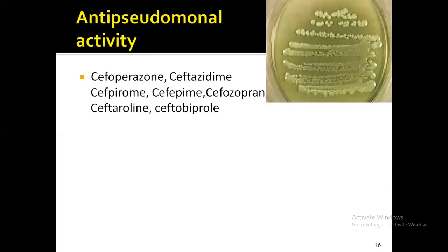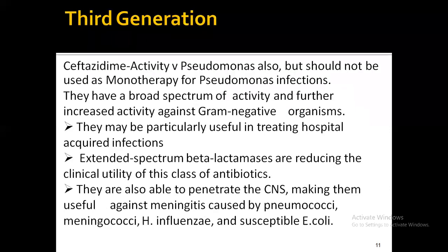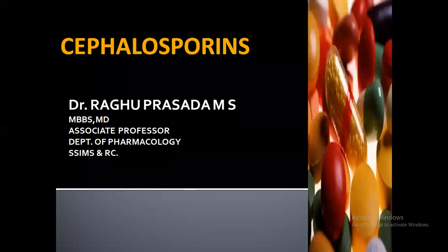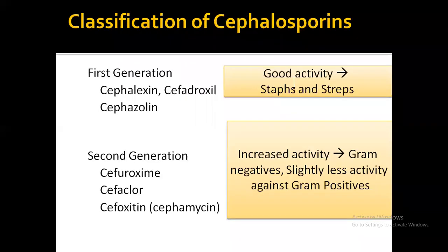The instructor calls on students to discuss the classification of cephalosporins. A student recites: First generation consists of cephalexin, cefadroxil, and cefazolin. Second generation consists of cefuroxime, cefaclor, and cefprozil.